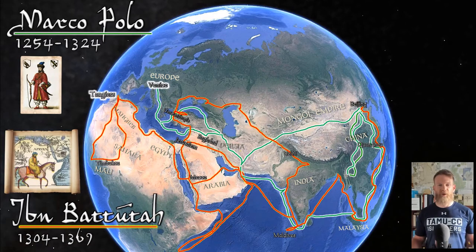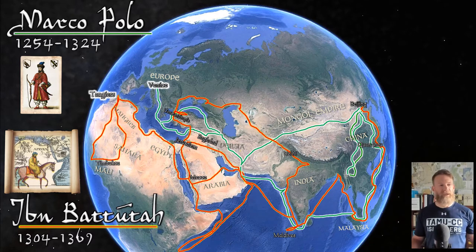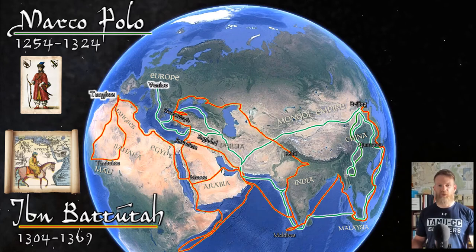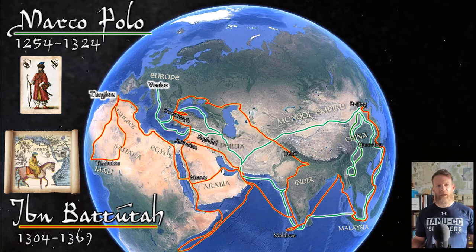You probably heard of Marco Polo, who lived between 1254 and 1324. He was from Venice, Italy, and traveled across the Mongolian Empire that ruled China, all the way to the east coast of China, then down into Southeast Asia, then back across Persia. He was able to sail around Southeast Asia and the coast of India and make his way back to Europe.